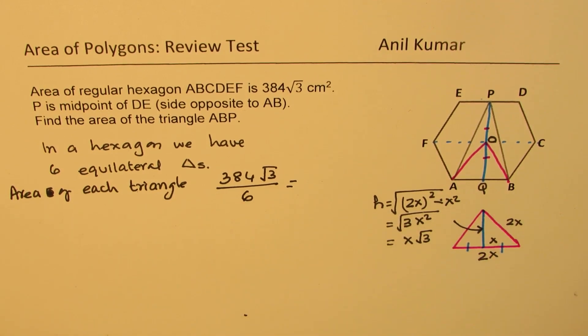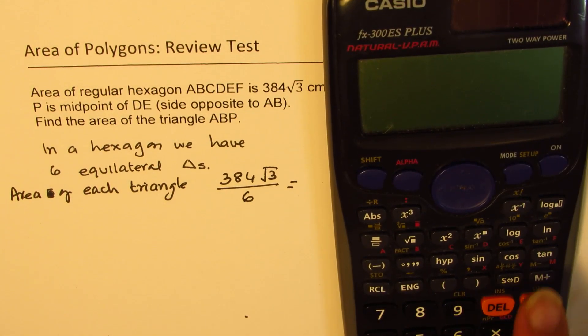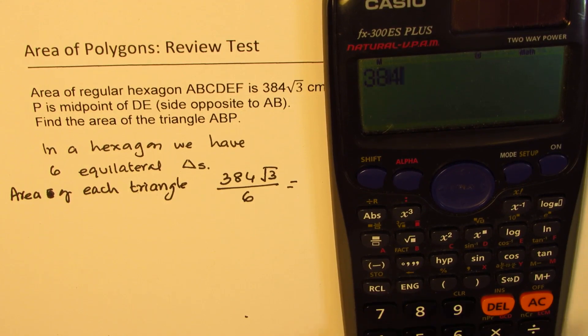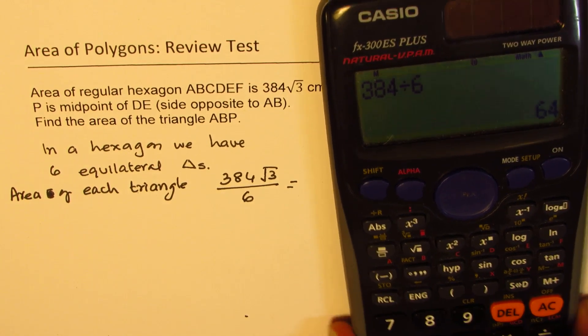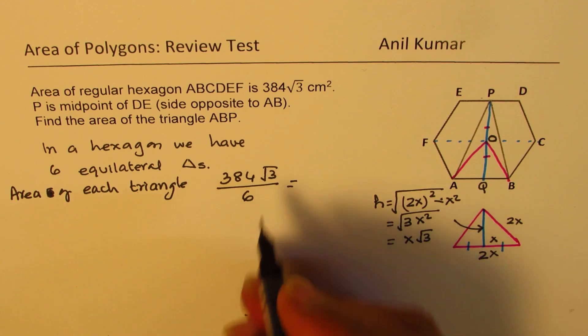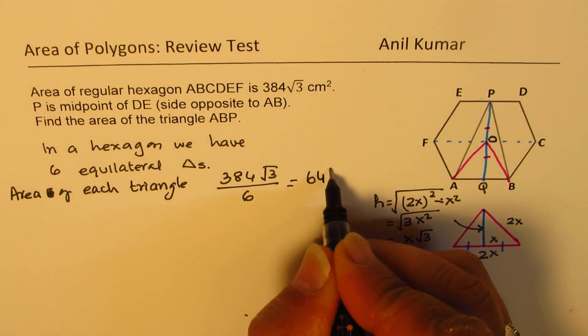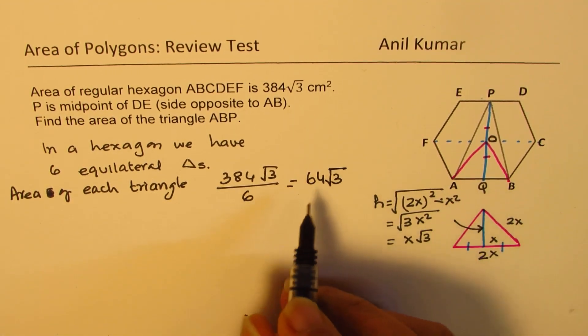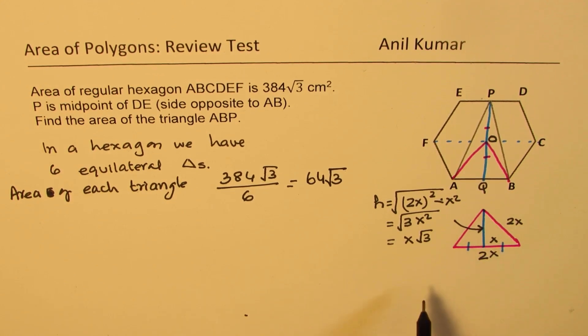Let's calculate. We will divide 384 by 6, we get 64, and of course square root of 3, so we get 64√3. So 64√3 is area of each triangle.